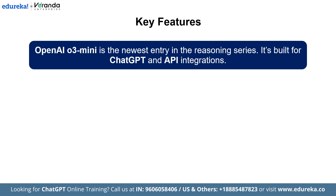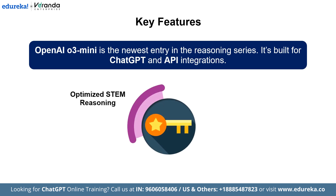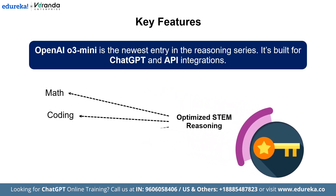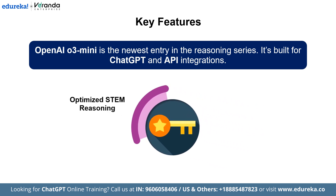OpenAI O3 mini is the newest entry in the reasoning series, and it's built for both ChatGPT and API integrations. First is optimized STEM reasoning — tailored for technical domains, O3 mini is engineered to excel in math, coding, and science, ensuring reliable performance on even the toughest challenges.